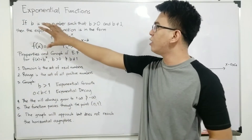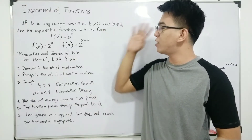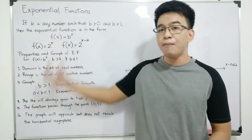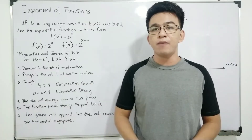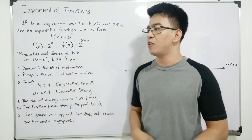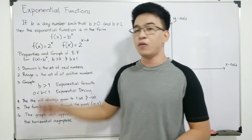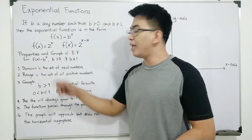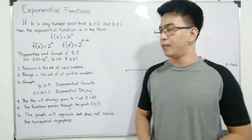Aside from the definition and restrictions of the base and examples of exponential function, we have here the different properties of the graph of the exponential function. For f of x is equal to b raised to x, where b is greater than 0 and b is not equal to 1.